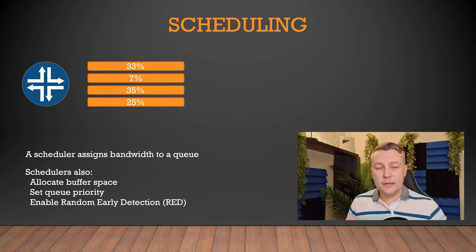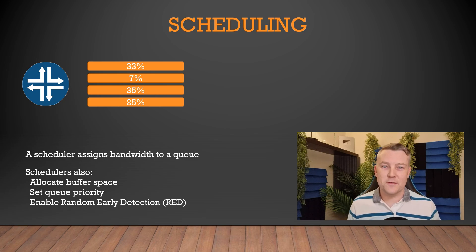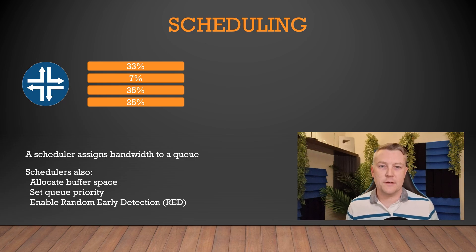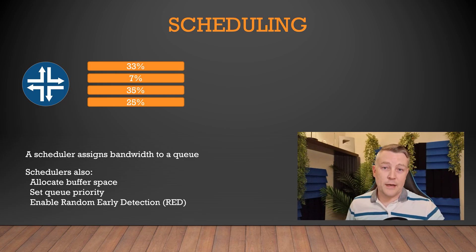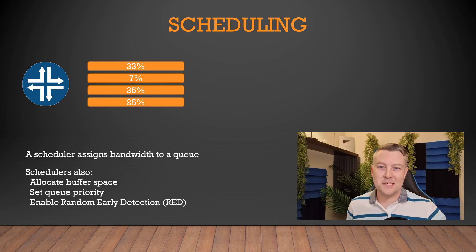So that's the very brief quick intro into how class of service works in Junos, or on Juniper switches and routers. I'm now going to create a video on how to configure the things we've just looked at, and I hope to see you there.